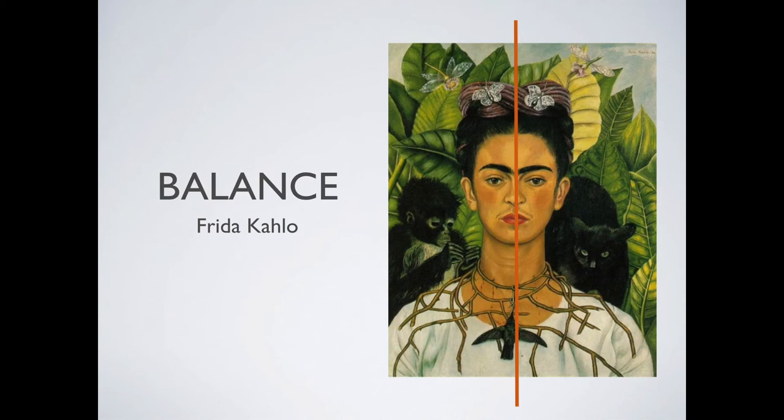If you imagine all the different parts of this painting moving to one side — the monkey joining the cat, the butterflies and dragonflies flying over, and even Frida shifting over a bit — all of a sudden everything would seem really crowded on one side and empty on the other, making the crowded side appear heavier.